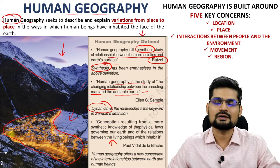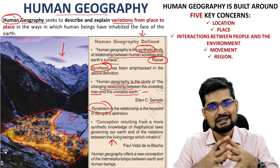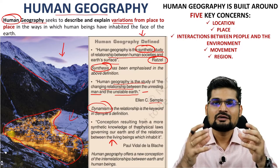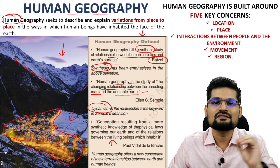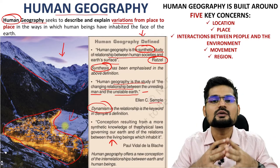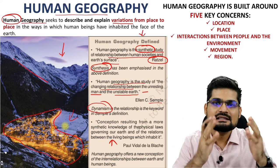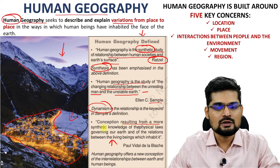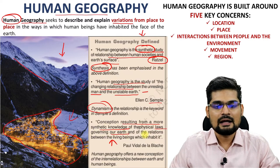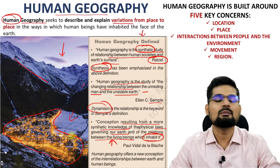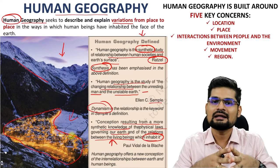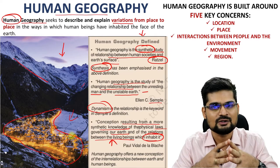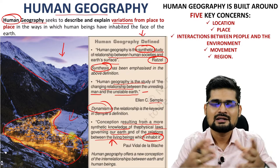The next and most important definition that changed the outlook of the world towards geography is human-centered geography, about 100 years back in 1916. Paul Vidal de la Blanche, the French geographer and pioneer of the possibilistic geographical school of thought, actually changed the way people looked into geography. That was the conception resulting from a more synthetic knowledge of the physical laws governing our earth and of the relationships between living beings and their habitation. This is where the concept of genre de vie and also the concept of milieu — the niche in the environment that human beings create — emerged. Human-centered geography starts from here.